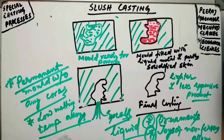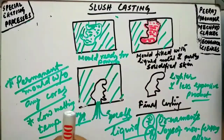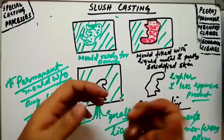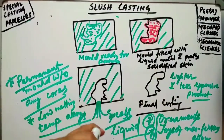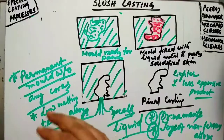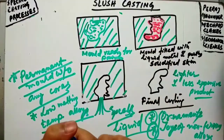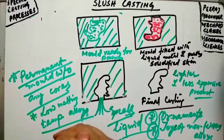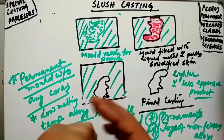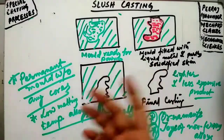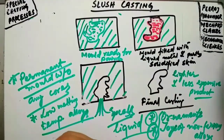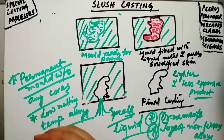This concludes slush casting and all the special casting processes. We will now move on to casting defects and solve numericals related to solidification time, riser design, and gate design. Stick with Mech Pro Classes for more quality videos on mechanical subjects. Thank you for watching — if you have any comments, please comment in the comment section.